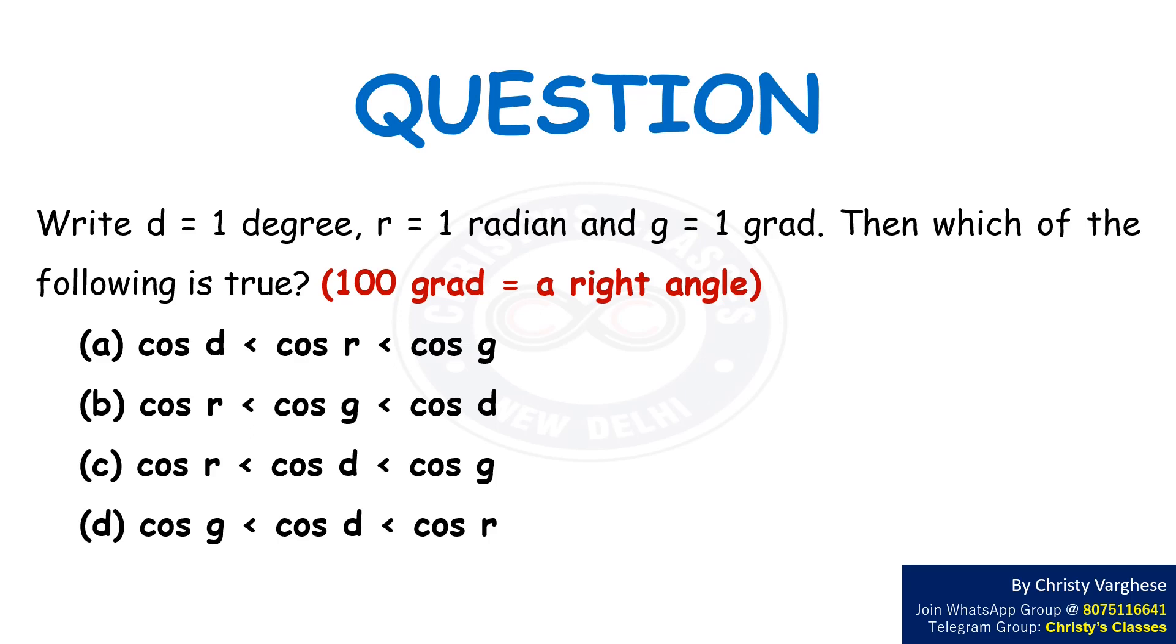Write d equals 1 degree, r equals 1 radian and g equals 1 grad. Then, which of the following is true?